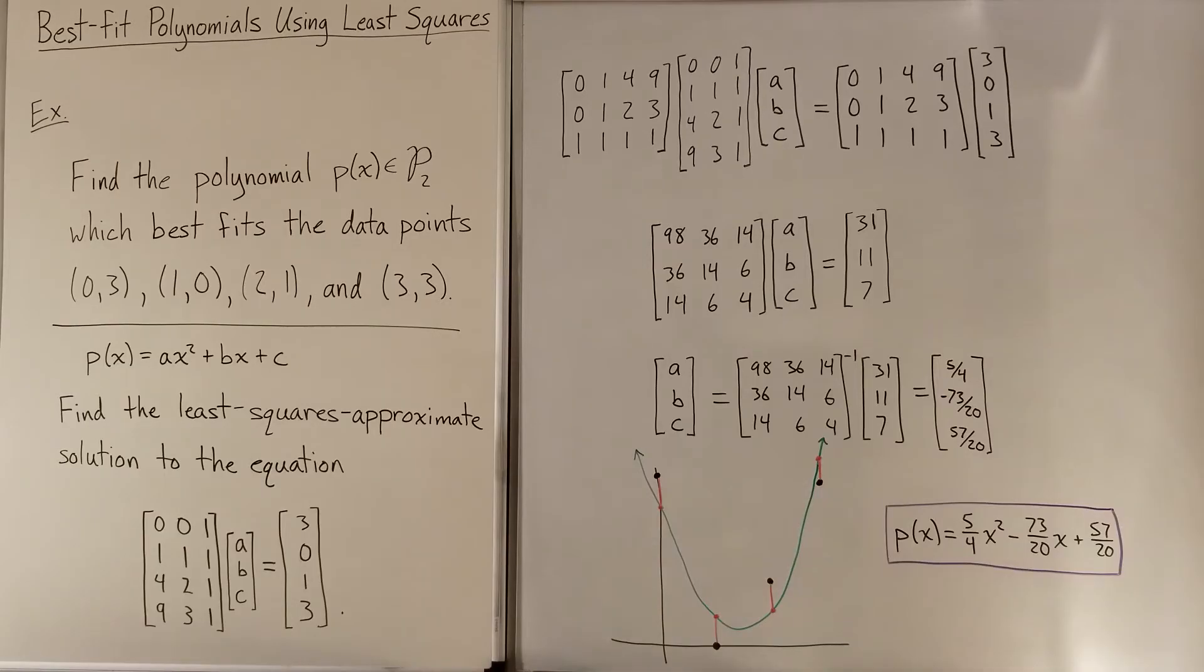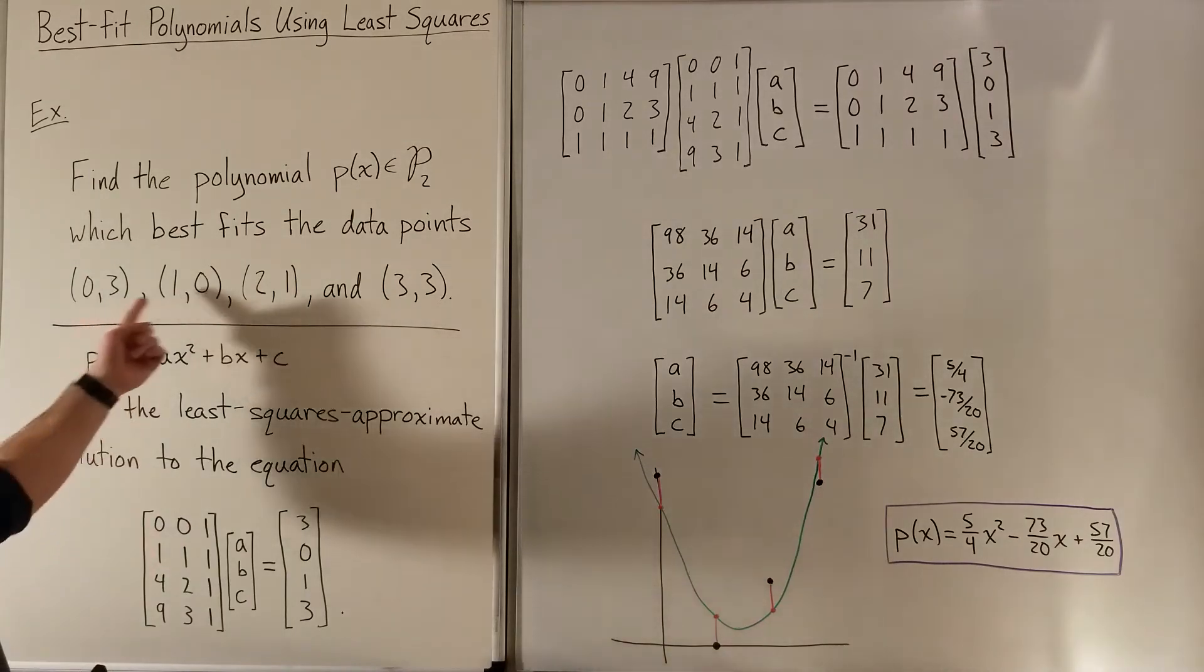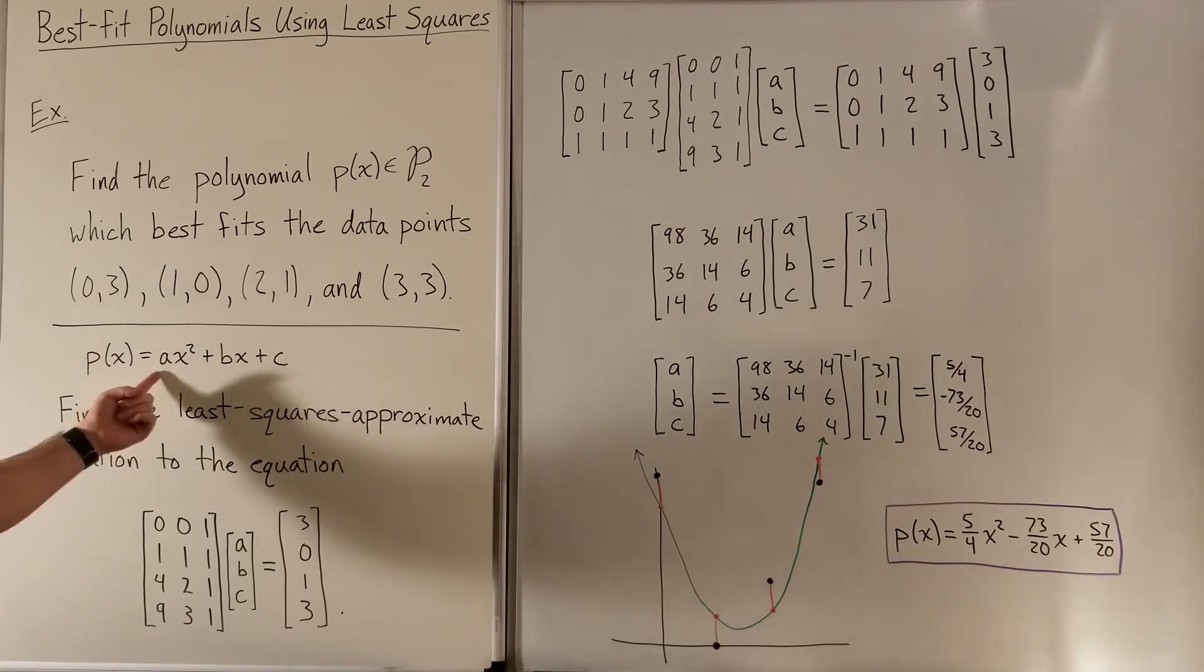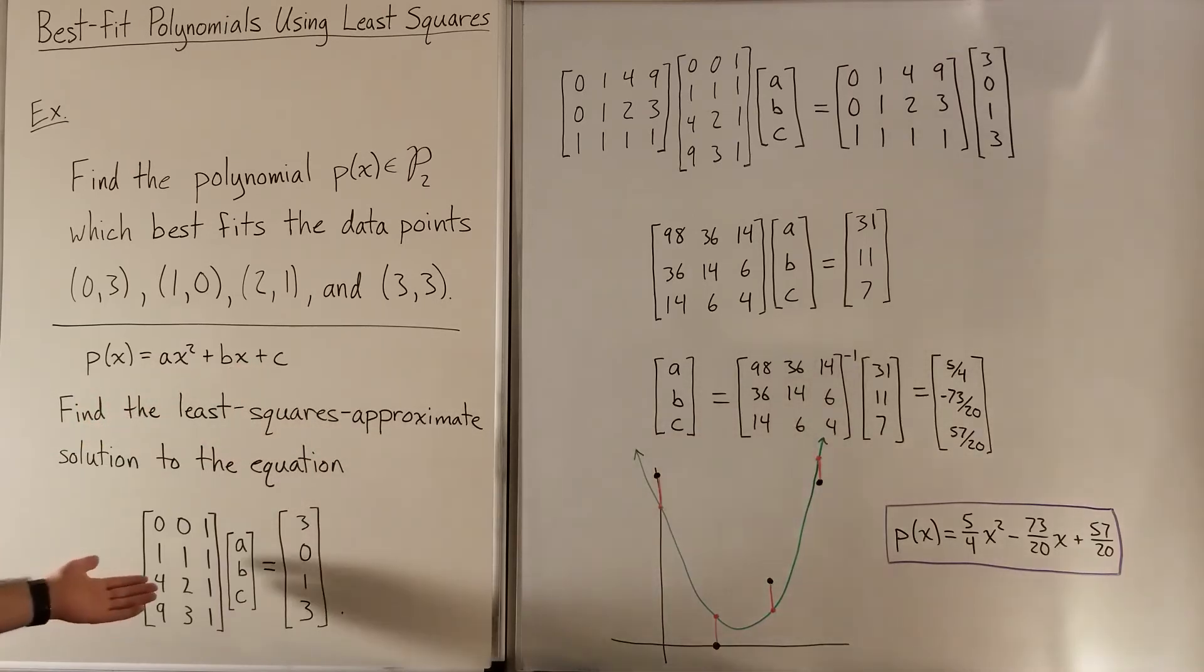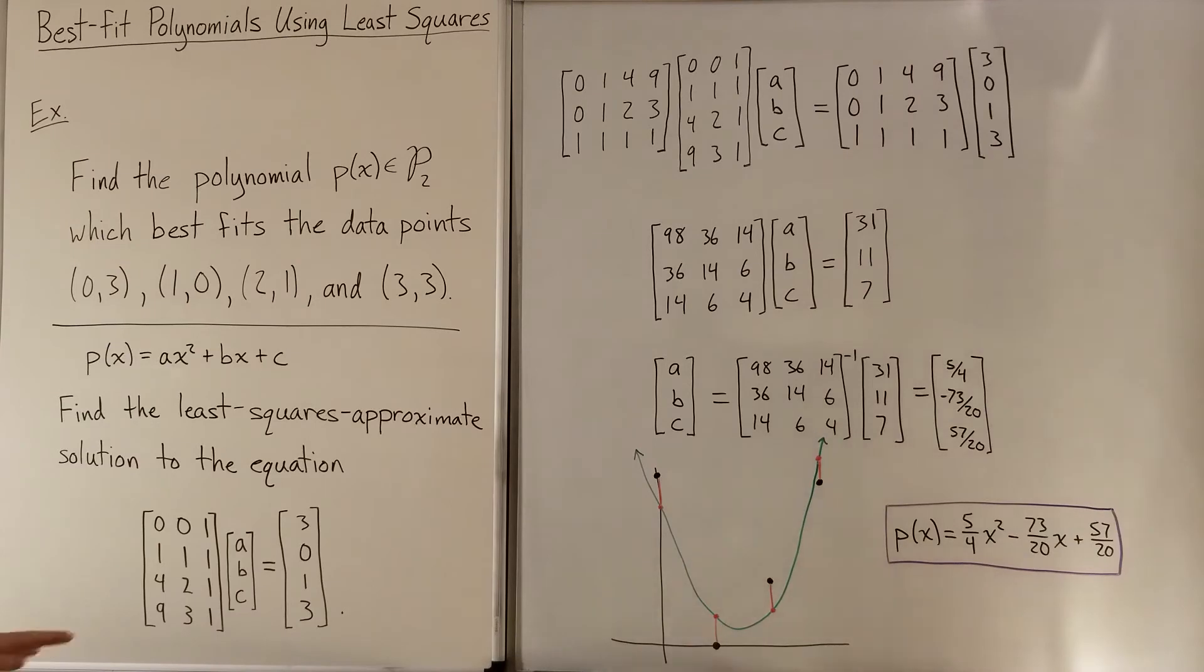Now let's look at an example where we need to use least squares approximation to solve. So we're going to be trying to find the quadratic again, and instead of only having three points, we now have a fourth point here. Okay, so we're going to go through the same general process for this setup. We still have our p(x) = ax^2 + bx + c. And now when we're creating this matrix times [a, b, c] equaling our y values, we're just going to have a fourth row down here, as well as a fourth entry in our y value column.